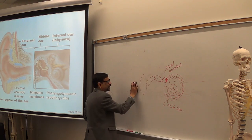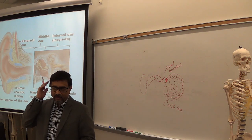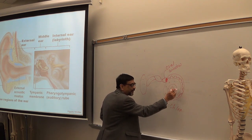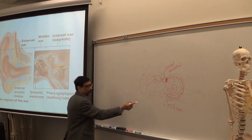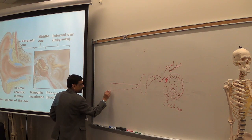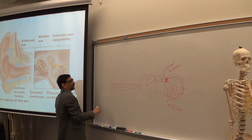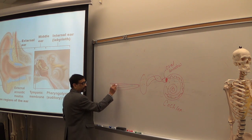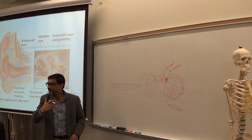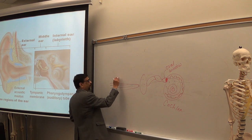If you uncoil the cochlea and look inside, there are two membranes that divide the cochlea into three chambers. The upper membrane is called the vestibular membrane. A cochlear implant works by placing an artificial cochlea under the bone around the ear to replicate this process for those with cochlear damage.